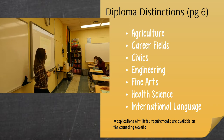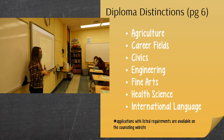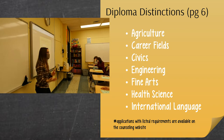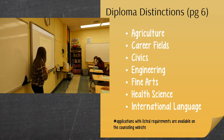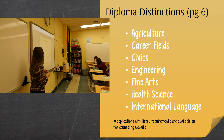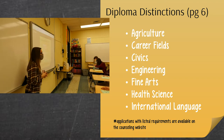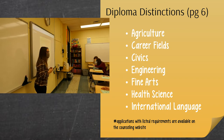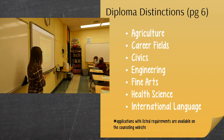Diploma distinctions can be found on page six of the registration handbook. A distinction means you're taking classes focused on a certain area of study and get recognized for it when you graduate as a senior. We offer distinctions in many different areas, and there are extra components — some require you to participate in a club, maintain a certain GPA, or compete in a certain way. You can find all applications on our counseling website or talk to teachers in those departments. I encourage everyone to take a distinction if you're interested in that subject area — you get a cord at graduation — but don't build your schedule solely around that purpose.